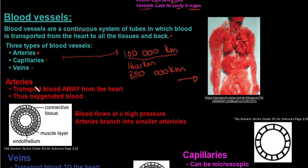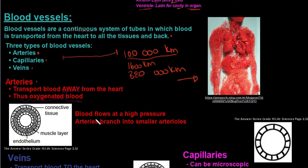Let's look at arteries first. Arteries transport blood away from the heart, and they carry oxygenated blood — blood that is rich in oxygen because it has just received that oxygen from the lungs. This blood flows at very high pressure because it has to reach all of the organs and all of the extremities of the body.